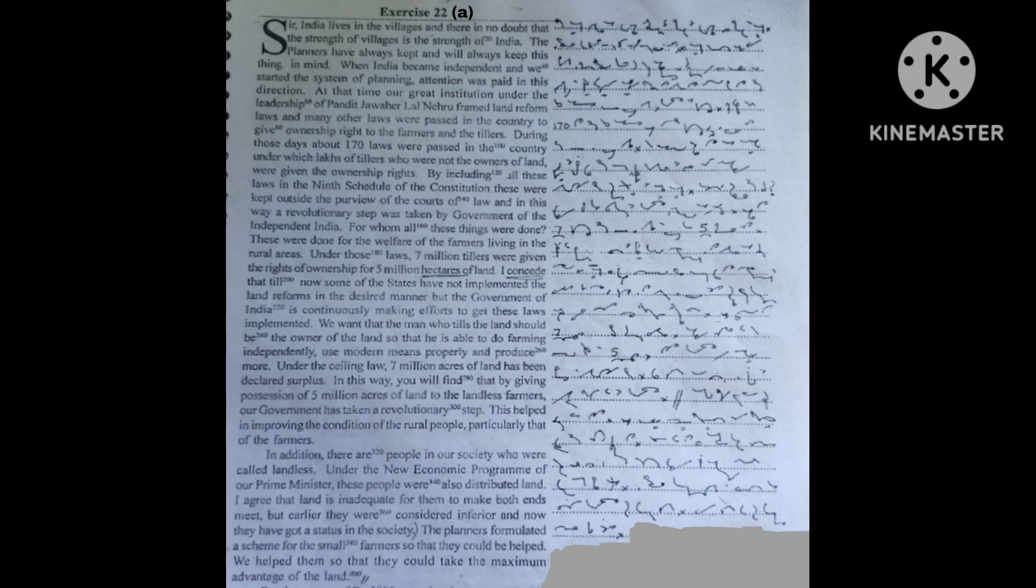For whom all these things were done? These were done for the welfare of the farmers living in the rural areas. Under those laws, 7 million tillers were given the right of ownership for 5 million hectares of land.